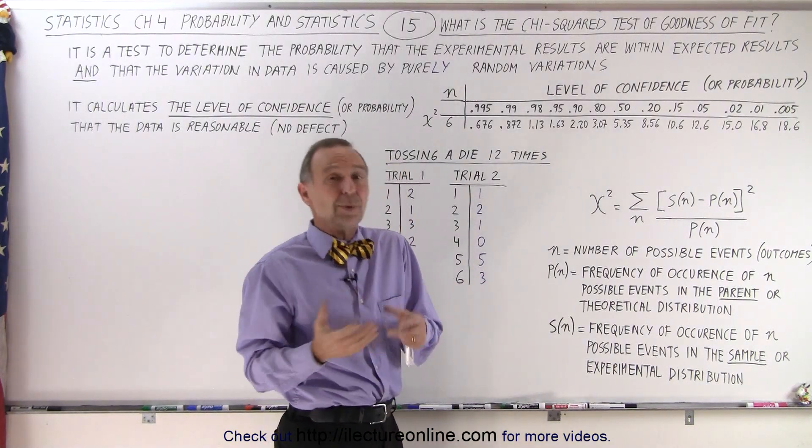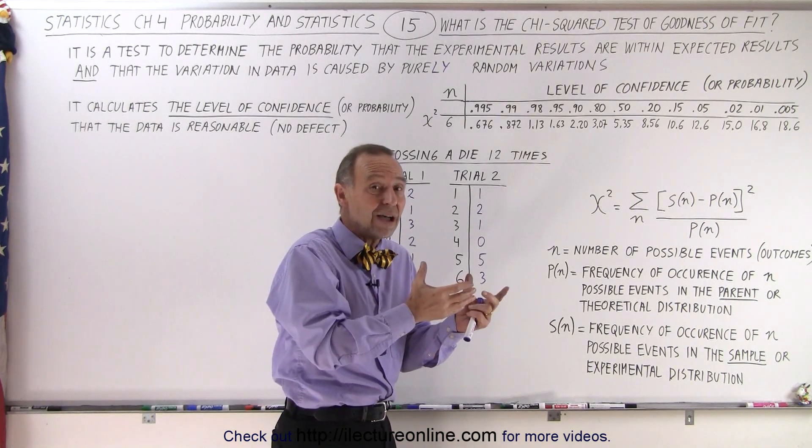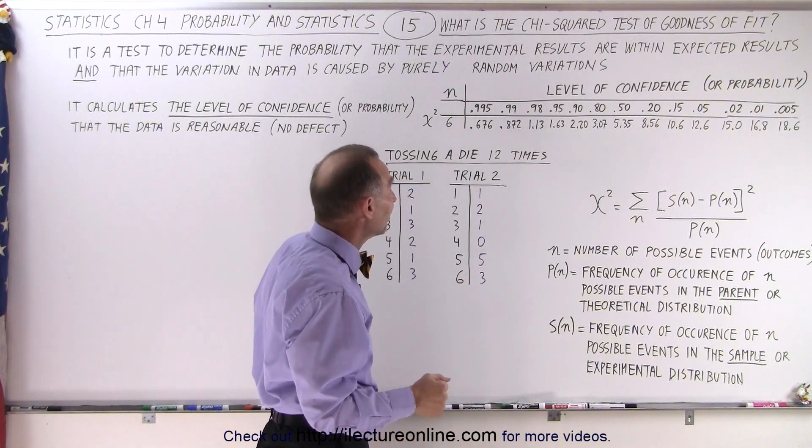Let's say we get a result of 50% relative level of confidence. Then, well, is it good data? Is it bad data? We can't really tell. But if it's 95 or it's 0.05, then of course we can tell easily.